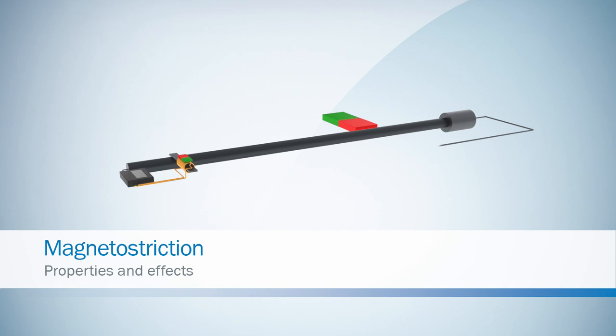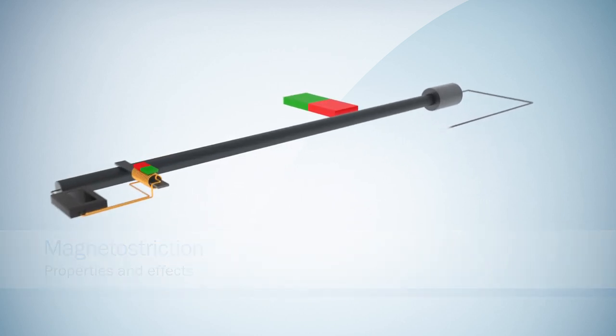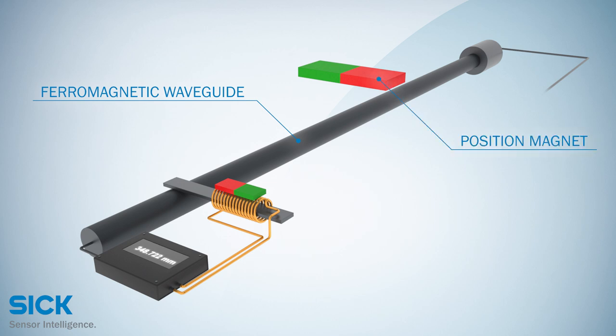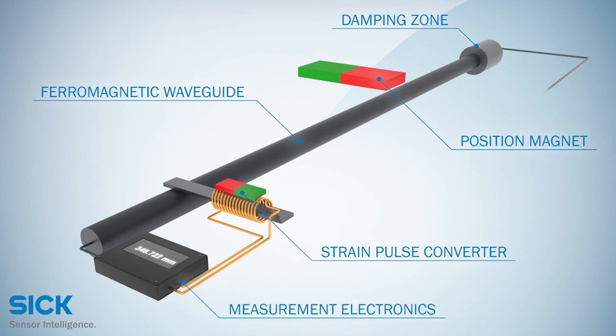SICK linear encoders use the properties and effects of magnetostrictive technology. Magnetostrictive linear encoders consist of a ferromagnetic waveguide, a position magnet, a damping zone, a strain pulse converter, and measurement electronics.